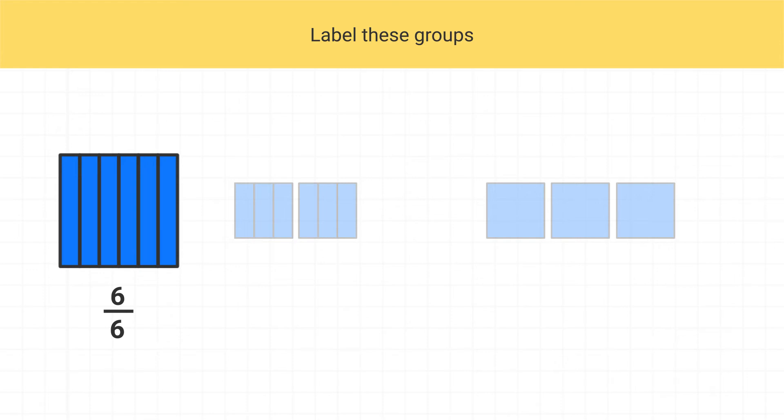And that makes sense, because we know 6 sixths is the same thing as 1 whole, which is what we have here, 1 whole square.